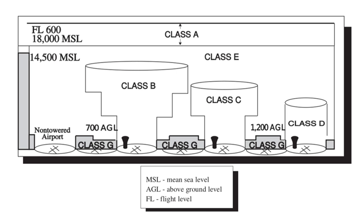Class G airspace includes all airspace below 14,500 feet MSL not otherwise classified as controlled. There are no entry or clearance requirements for Class G airspace, even for IFR operations. Class G airspace is typically the airspace very near the ground — 1,200 feet or less — beneath Class E airspace and between Class B/D cylinders around towered airstrips. Radio communication is not required in Class G airspace, even for IFR operations. Class G is completely uncontrolled.